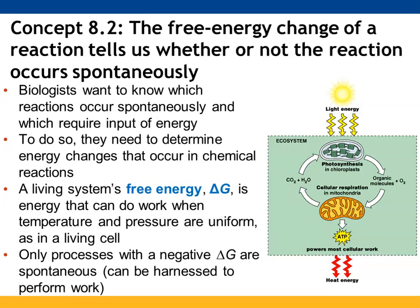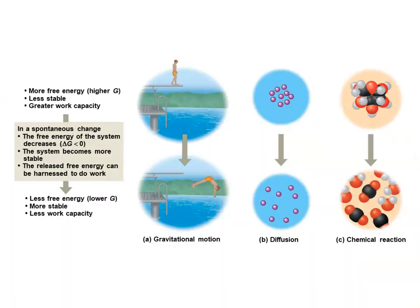To determine if a reaction occurs without an energy input, we can use the free energy change to determine the spontaneity of a reaction, typically examined using delta G. If you have a negative delta G, you are giving off energy that can be used to perform work — negative delta G is spontaneous. A positive delta G means you require energy for those reactions to occur, making them non-spontaneous.